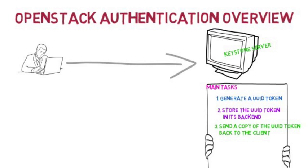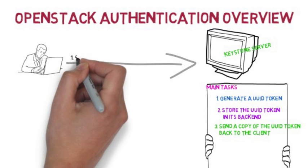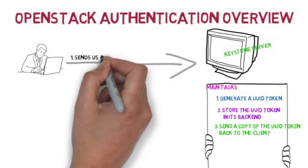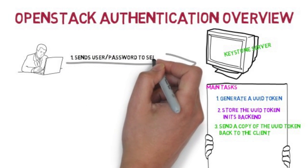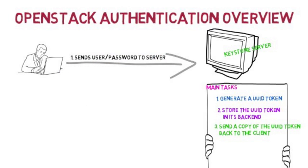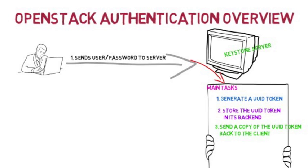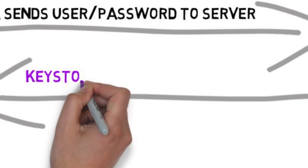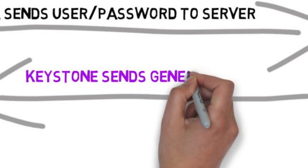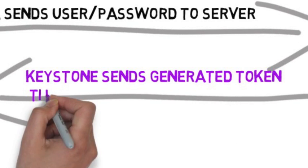To begin with this, the client will send its credentials to the Keystone Server. The Keystone will perform these tasks and send back the generated token if the authentication passes.